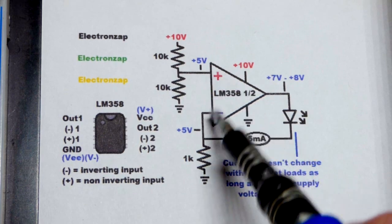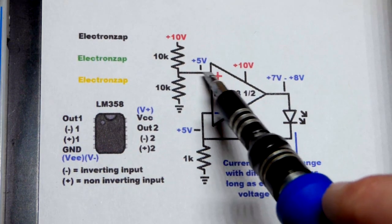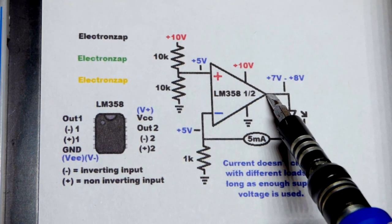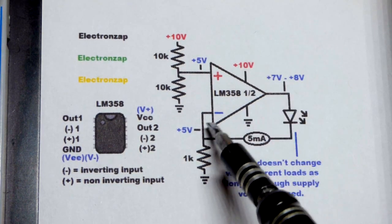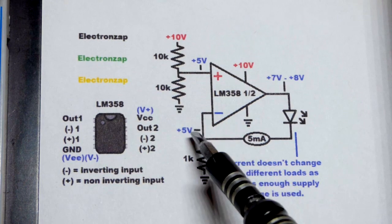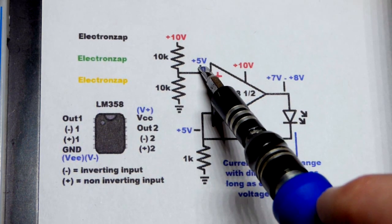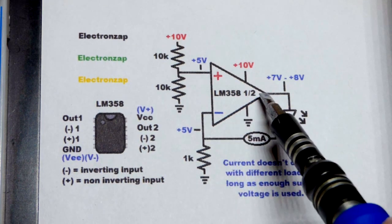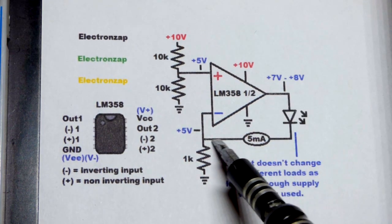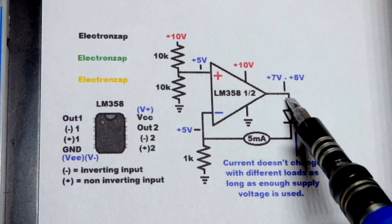No current goes in or out of the inputs. They just look at the voltages. So we got that voltage. What the output does, it raises the voltage until the inverting input has the same voltage as the non-inverting input. And so with negative feedback right there, we will eventually reach that point as long as we don't have too much in the way.